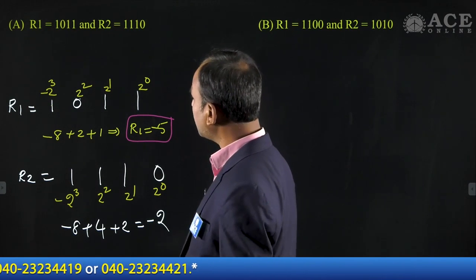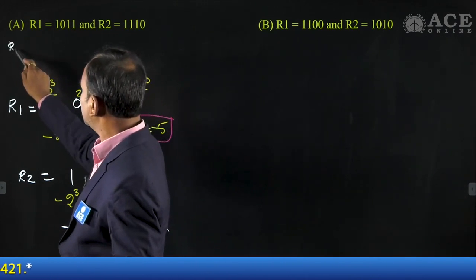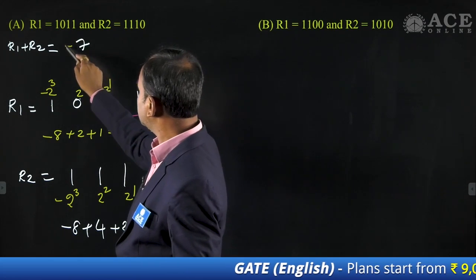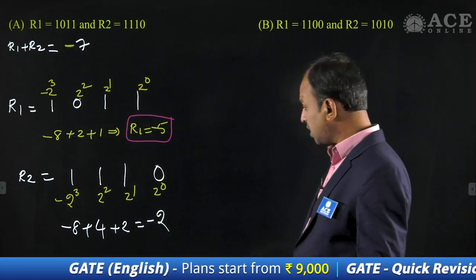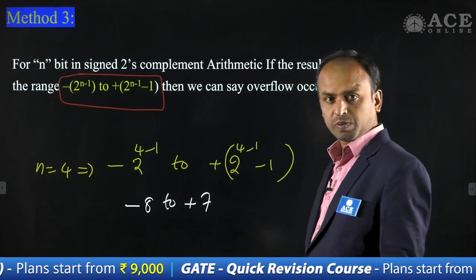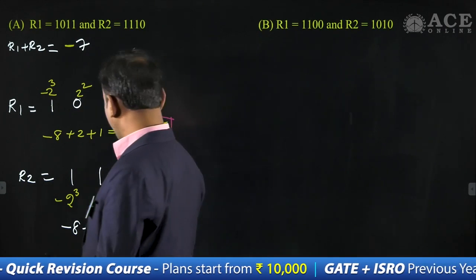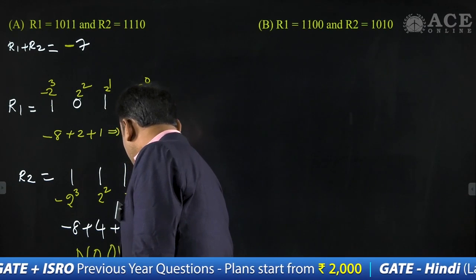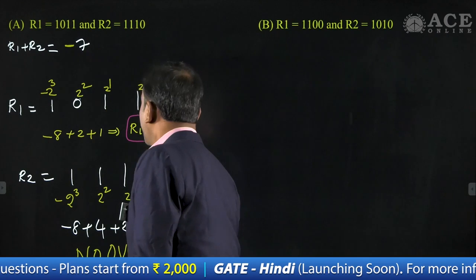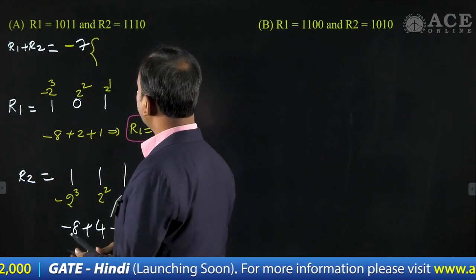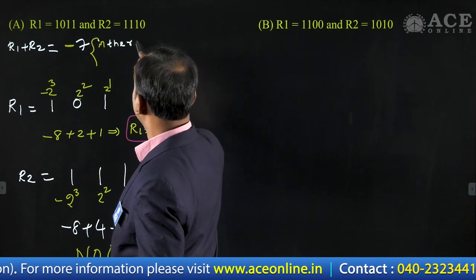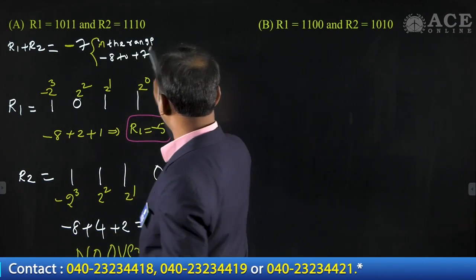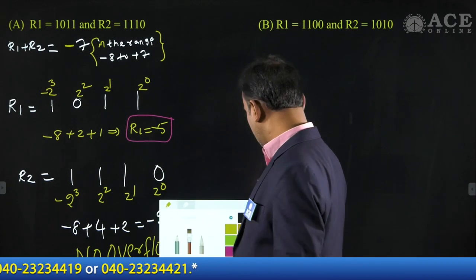R1 plus R2 equals minus 5 plus minus 2 equals minus 7. Minus 7 is within the range of minus 8 to plus 7. Since it is within the range, there is no overflow for option A. No overflow.